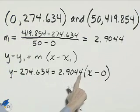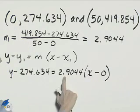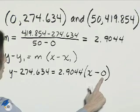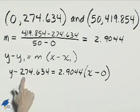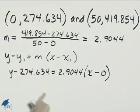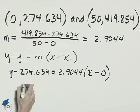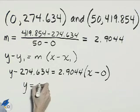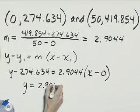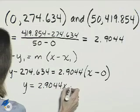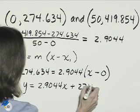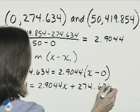Now we know 2.9044 times x, and 2.9044 times 0 is just going to give us a value of 0. So we'll add this 274.634 to the right, giving us y equals 2.9044x plus 274.634.